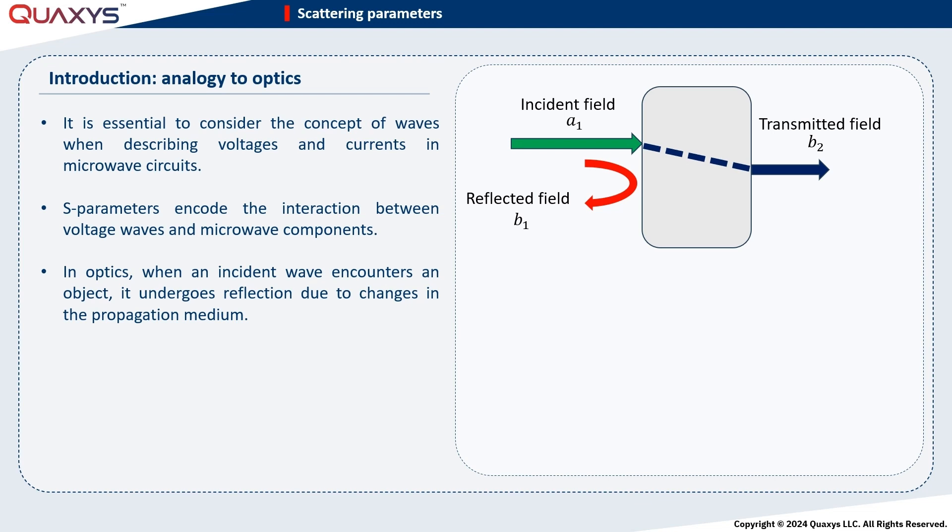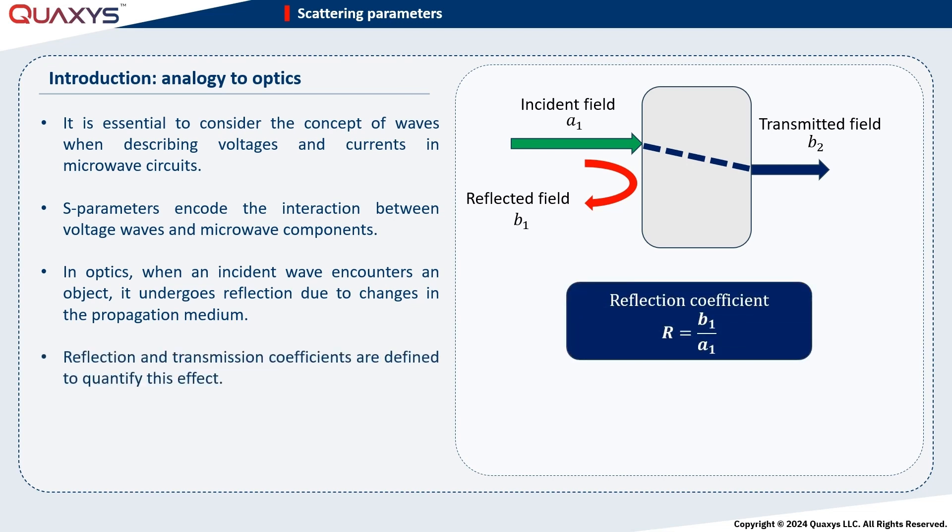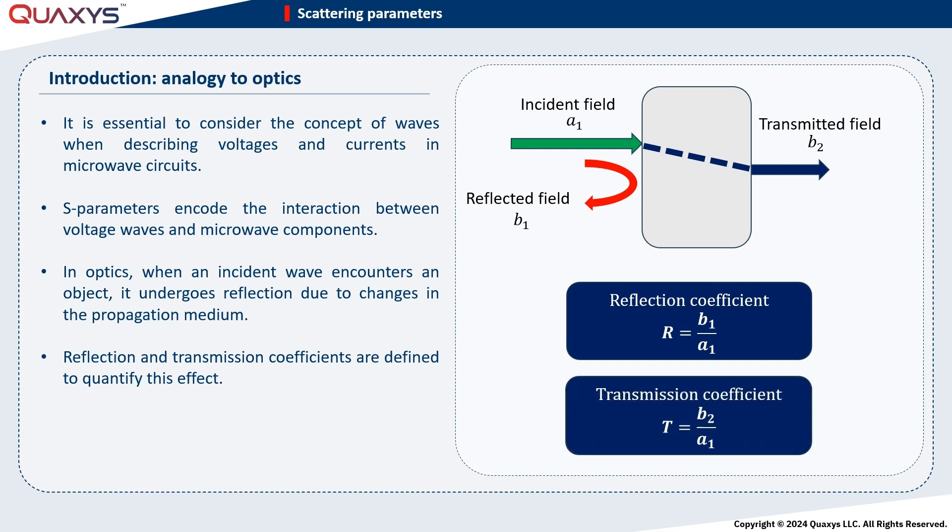Reflection and transmission coefficients are introduced to quantify these effects. The reflection coefficient represents the ratio of reflected-to-incident fields, while the transmission coefficient signifies the ratio of transmitted-to-incident fields. As we will see shortly, this fundamental concept extends to RF and microwave components as well and is the basis for defining S-parameters.